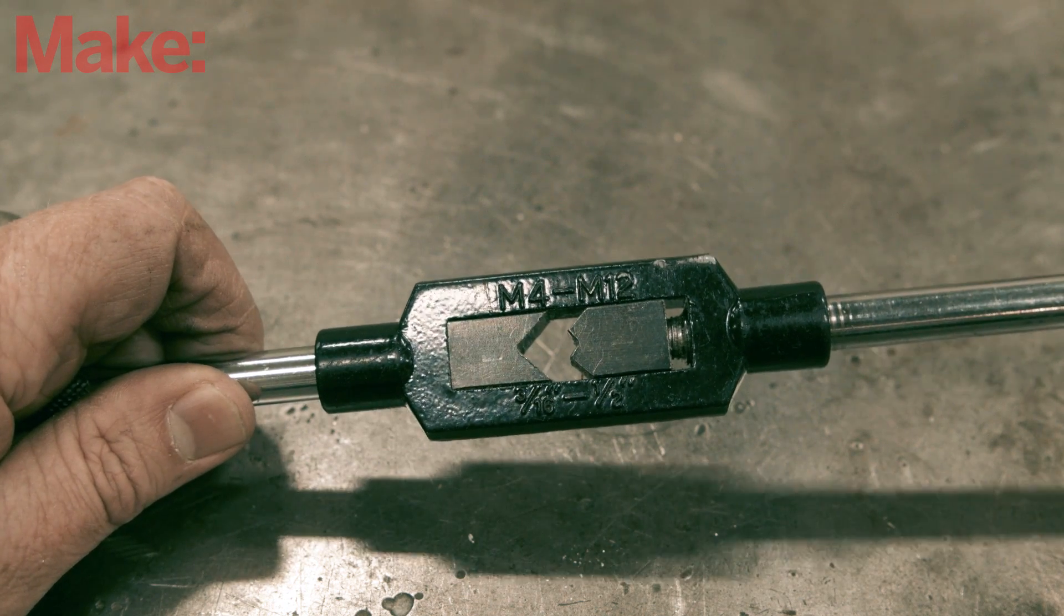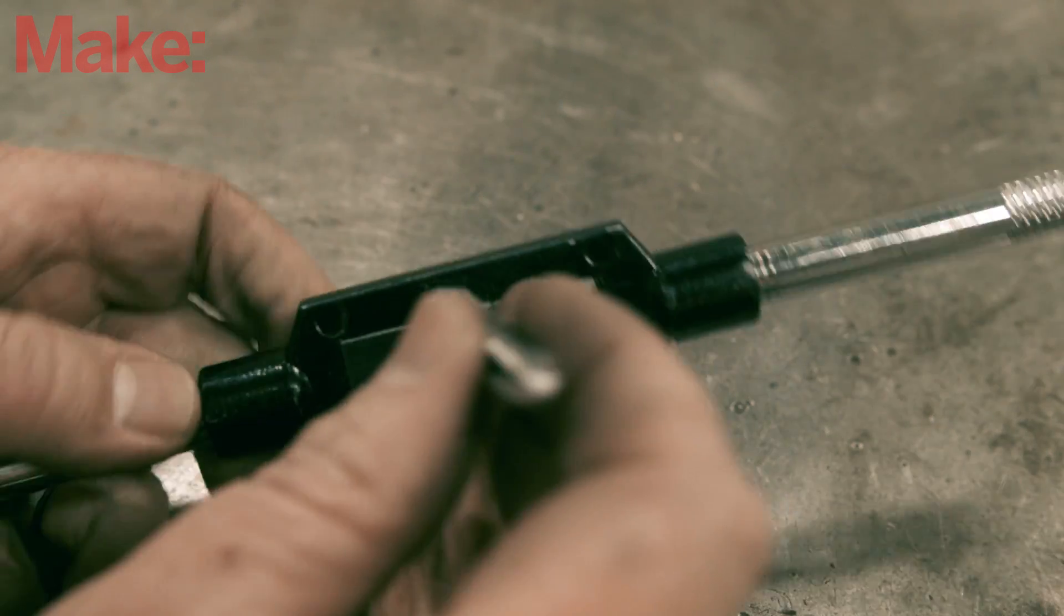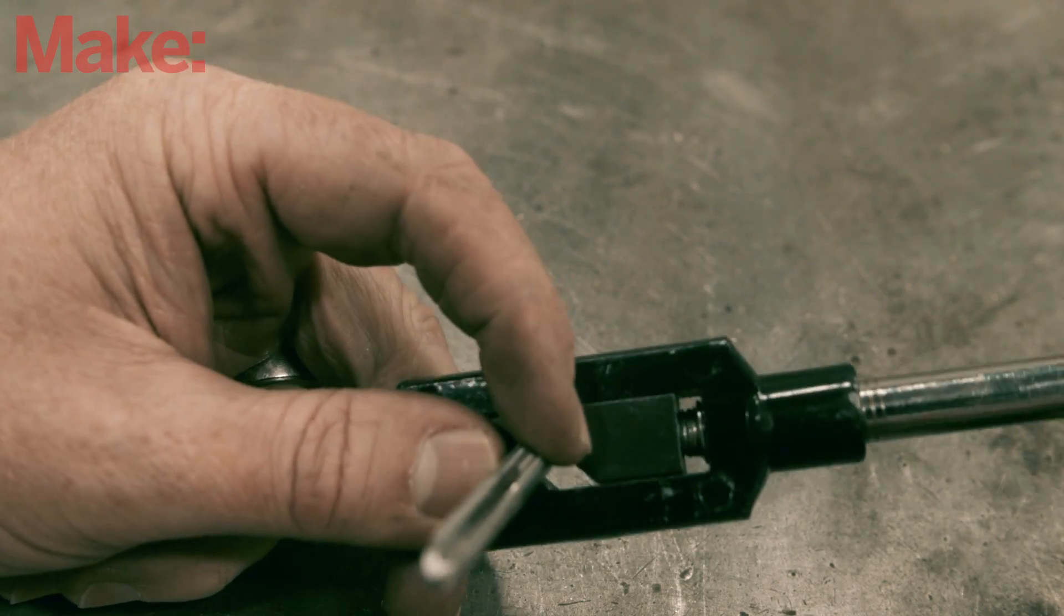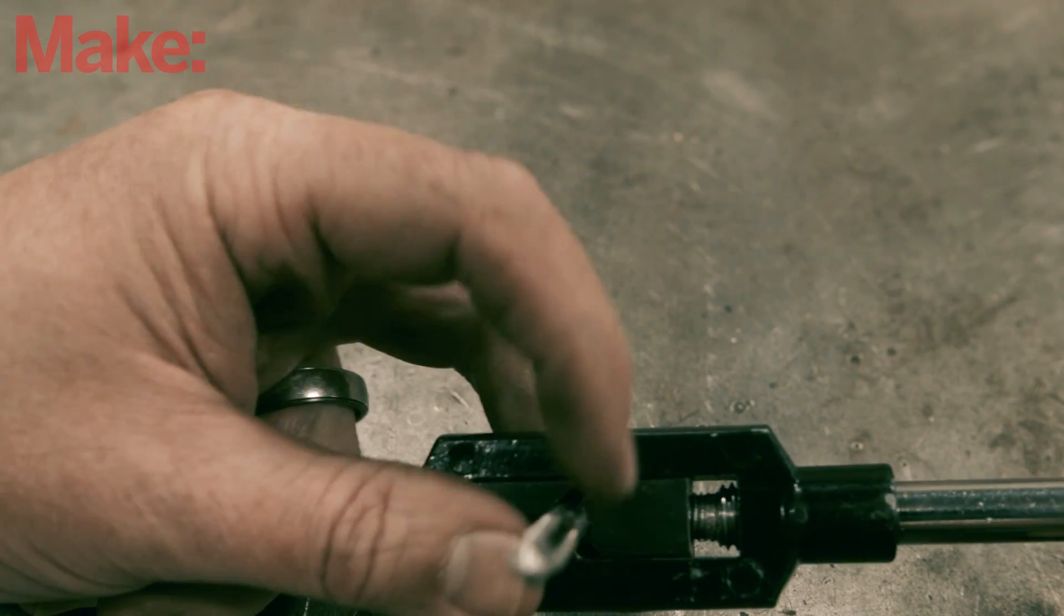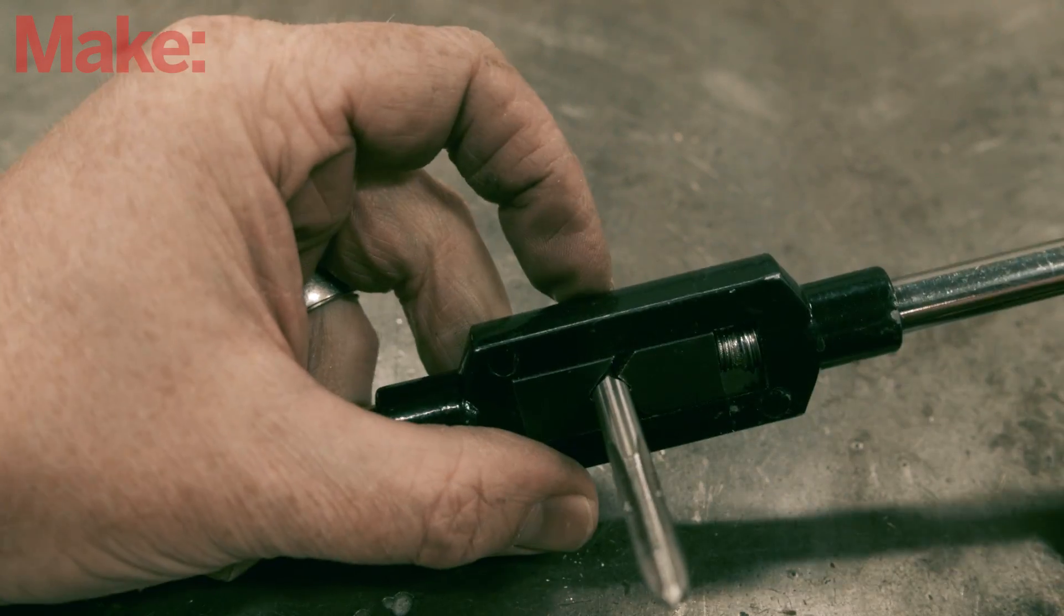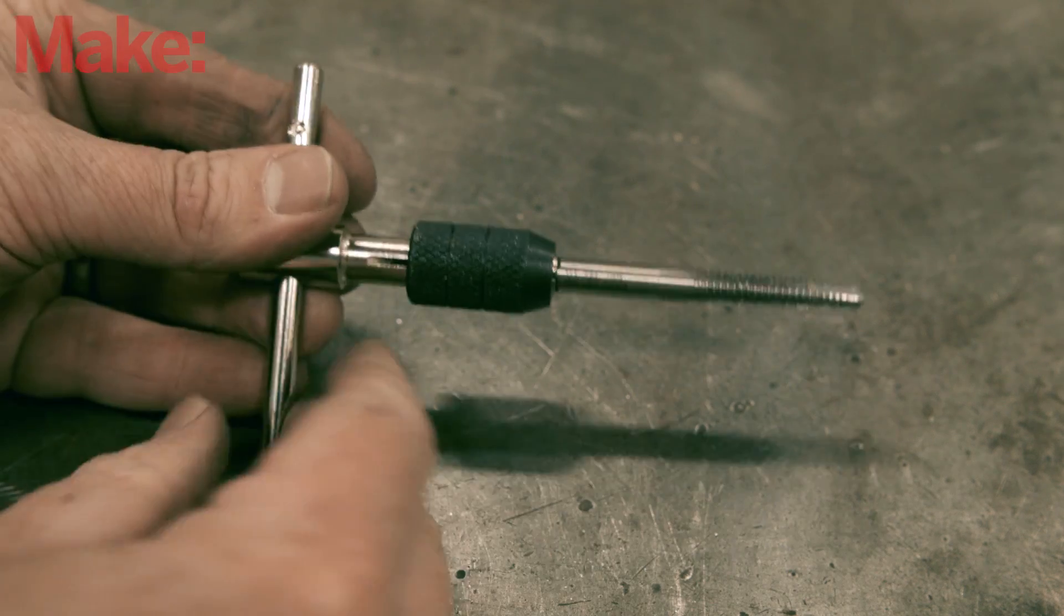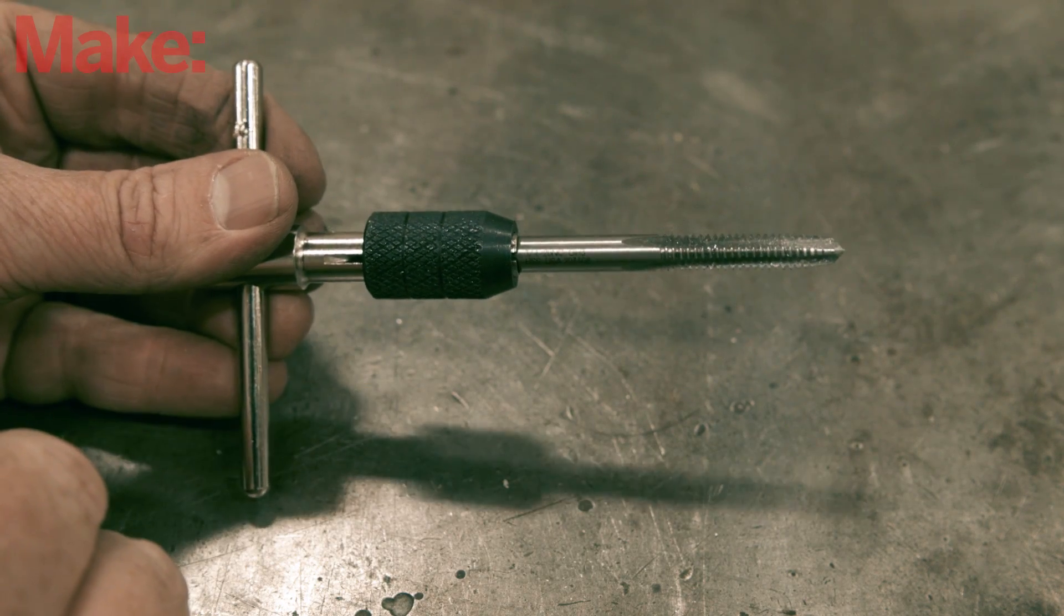Since taps are just bits, they need a tool to turn them. The trusty tap wrench is specifically made for this. Insert the square end of the tap into the adjustable jaws of the tap wrench and twist the handle that tightens the jaws. If you don't have enough clearance for the handle, you can use a T wrench. These smaller alternatives are great anywhere a normal tap wrench won't fit.